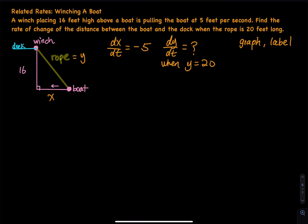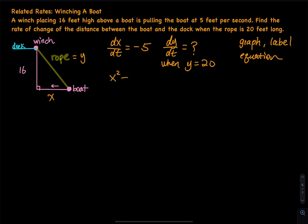The next step is to write an equation. I will be using the Pythagorean theorem: x squared plus 16 squared equals y squared. This is called the Pythagorean theorem.